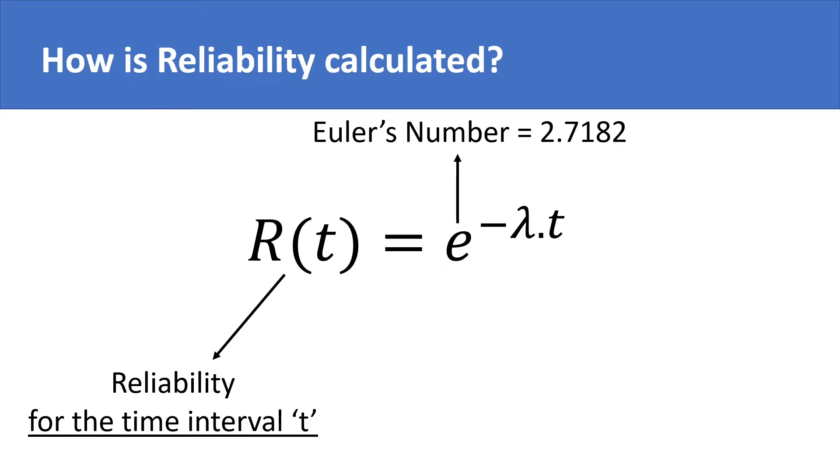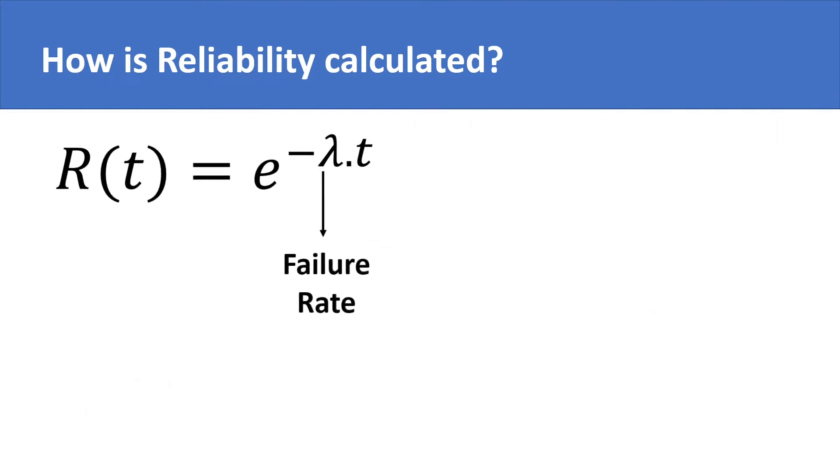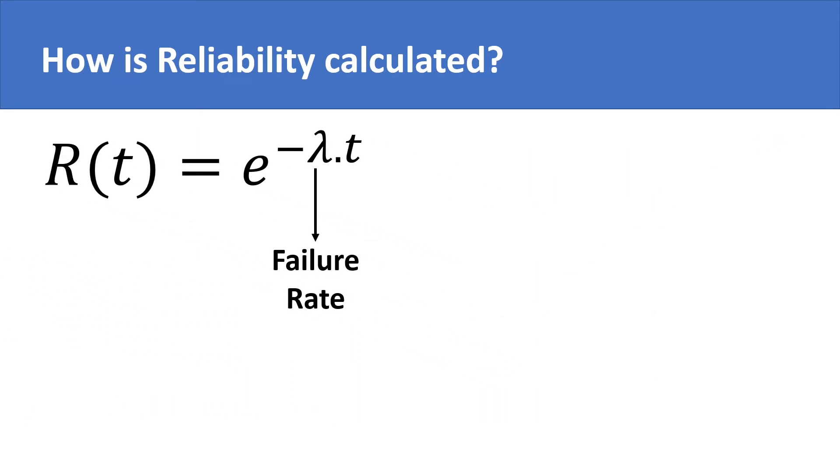This product is of what is called a failure rate, represented by lambda, and of course, the same time interval for which reliability is to be calculated for a machine. The only variable that needs explanation in this formula of reliability is the failure rate. Rest of the variables are self-explanatory.